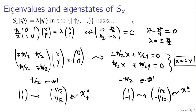These are the states with definite x component of angular momentum. A superposition of spin up and spin down with equal coefficients gives plus x-spin, while spin up minus spin down gives minus x-spin. This is the fundamental weirdness of quantum mechanics — that's just how these things work in the real world.